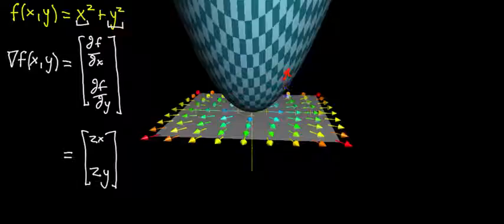And if you project your point down onto the input space, so this is the point above which you are, that vector, the one that's going to get you going uphill the fastest, the direction you should walk, for this graph, it should kind of make sense, is directly away from the origin.